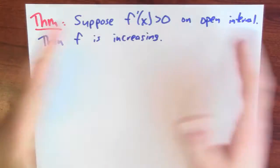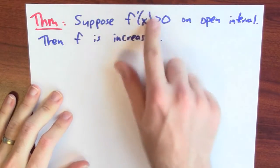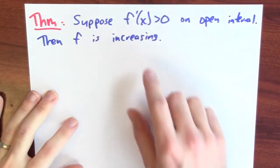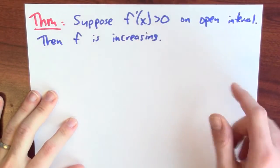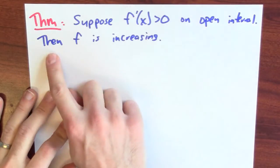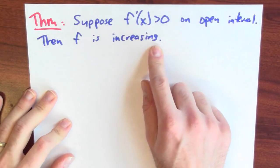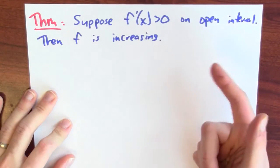The mean value theorem has some other applications where it connects derivative information back to information about the original function. Here's a theorem: suppose the derivative of some differentiable function is positive — greater than zero — on some open interval. Then the function is an increasing function, meaning that it sends bigger inputs to bigger outputs. You probably already believe that statement.